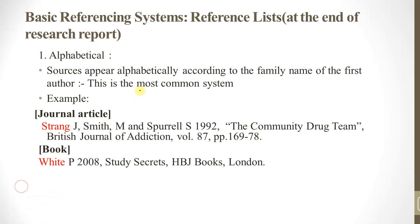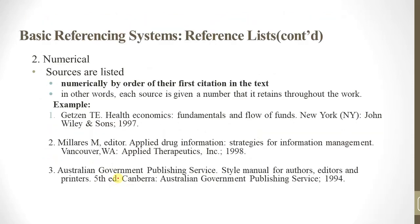Basic reference systems: reference lists at the end of a research report can be organized alphabetically by the family name of the first author. This is the most common system, used for example in journal articles and books.